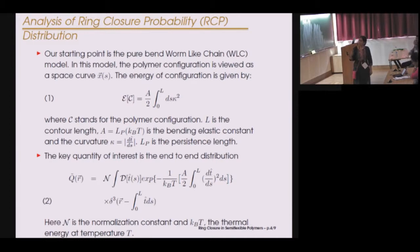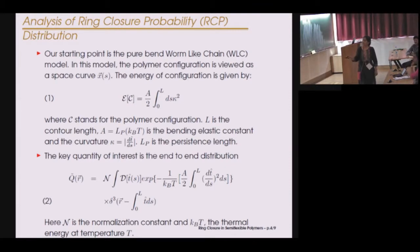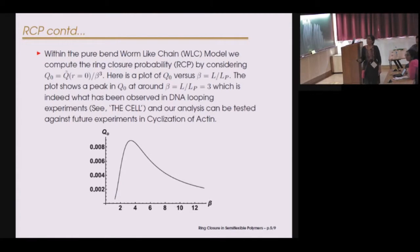The key quantity of interest is the end-to-end distance distribution, which has a particular form. Notice the appearance of the delta function, which picks out polymer configurations with end-to-end distance equal to r, and the appearance of the Boltzmann factor where you see the configurational energy coming in. Within the pure bend worm-like chain model, we compute the ring closure probability by considering Q̃(r) for r equal to zero.